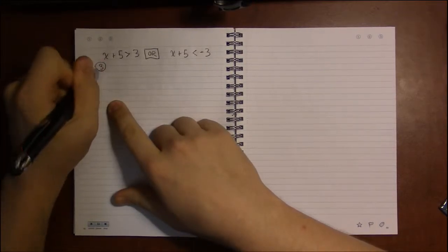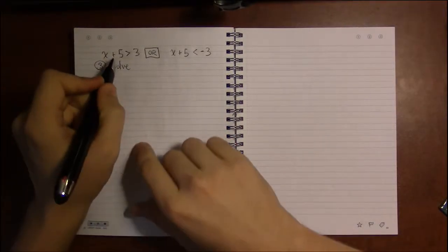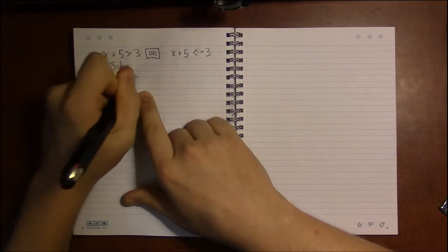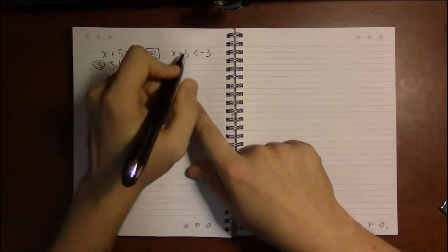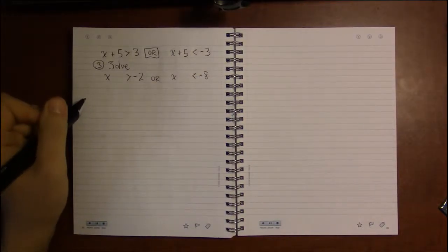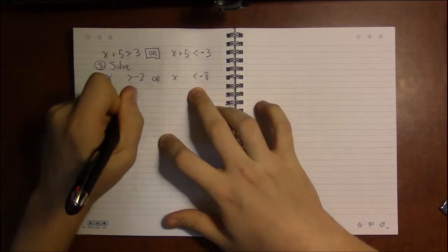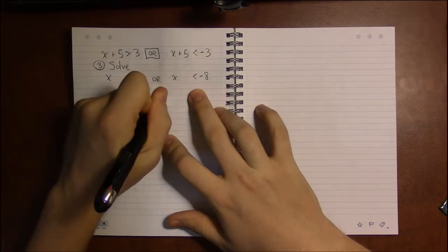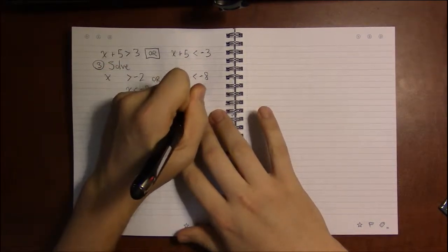And now everything's back to normal. We subtract 5 from both sides. 3 minus 5 is minus 2, and minus 3 minus 5, that's minus 8. So it's the case that x is less than minus 8, or x is greater than minus 2.